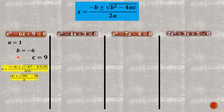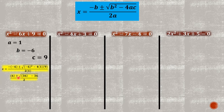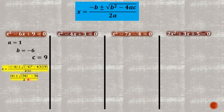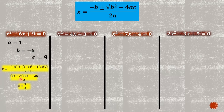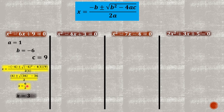Then we perform the operation given in the quadratic formula. Negative times negative is positive, so we have six plus or minus square root of negative six squared which is 36, minus four times one times nine which is 36. We can easily notice that 36 minus 36 is equal to zero, so our answer simplifies to six over two.